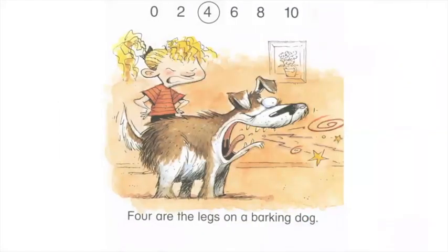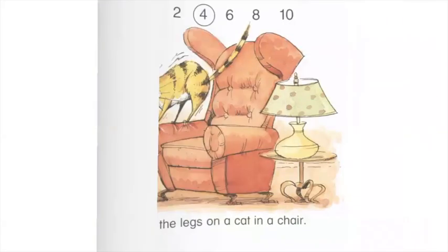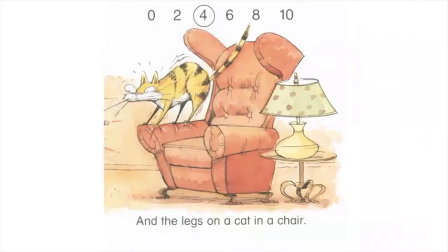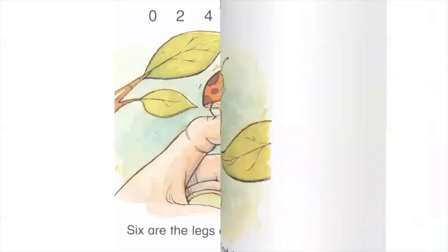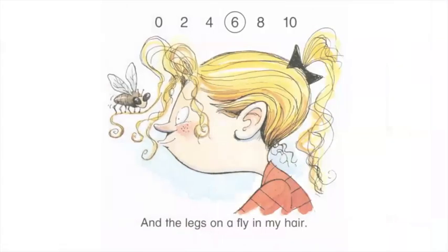Four are the legs on a barking dog and the legs on a cat in a chair. Six are the legs on a wee ladybug and the legs on a fly in my hair.